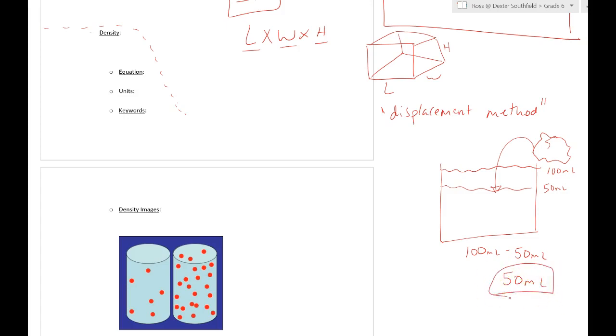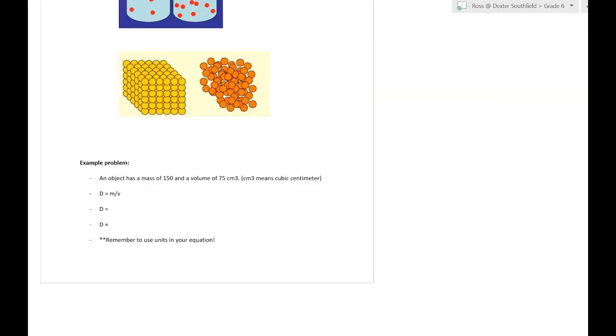The volume of that rock would be 50 milliliters. We call it the displacement method because this rock displaced or moved the water to a new place. Doing that method doesn't actually tell you the dimensions—I still don't know the length, width, and height of this rock, which is impossible to actually calculate because it's an irregularly shaped object. Since it's so weird, we have to use a different method, and that method is the displacement method.